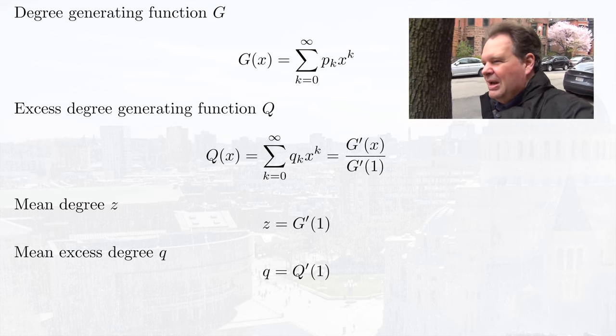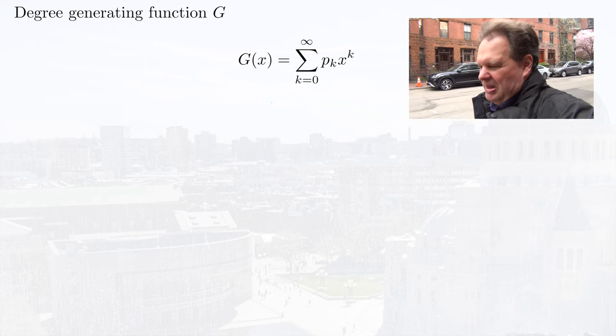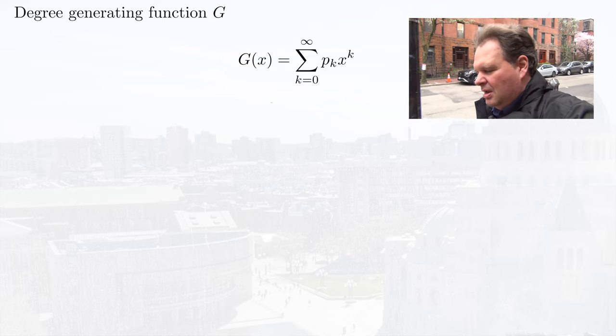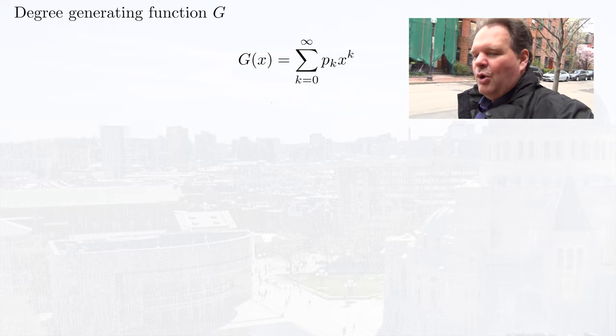In the previous video, we have also already seen that generating functions have some amazing tricks up their sleeve. Perhaps the most amazing is the composition rule, or dice-of-dice rule. If you want to sum over a random number of random processes, we can do this by plugging the generating functions into each other. If you pick a random node from a network and count the number of links on the node, that's kind of like rolling a dice — it's a process that gives you a random result.